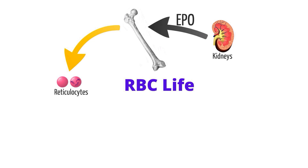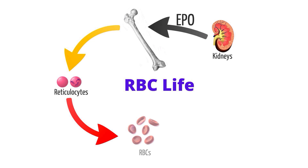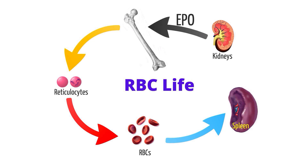These new cells are called reticulocytes. The reticulocytes are noticeable because they contain a visible ribosomal network to produce proteins. Ribosomes are enzymes that are involved in translation of RNA into proteins. Reticulocytes spend about three days in the bone marrow and one day in the bloodstream before they mature to RBCs by getting rid of the ribosomal network. Once in circulation as mature red blood cells, they have a lifespan of about 120 days. Old RBCs are filtered out by the spleen and are destroyed.